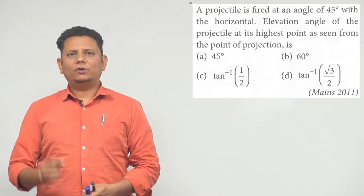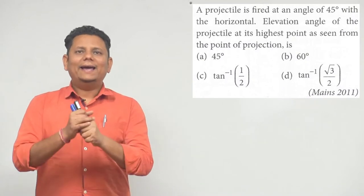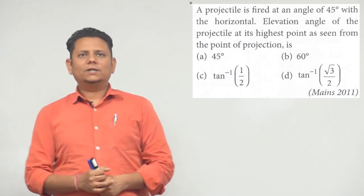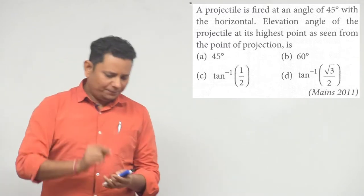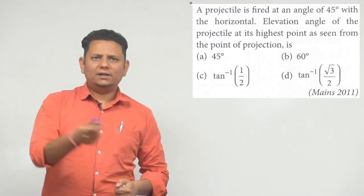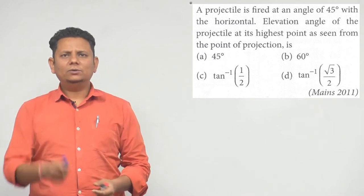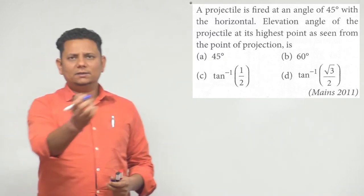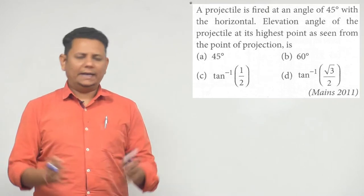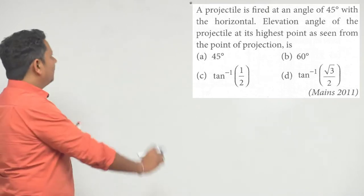Next question: A projectile is fired at an angle of 45 degrees with the horizontal. Elevation of the projectile at its highest point as seen from the point of projection will be? Options are 45 degrees, 60 degrees, tan inverse 1/2, and tan inverse root 3 by 2. This is a Mains 2011 question.